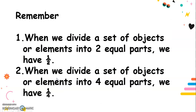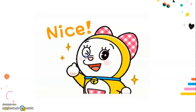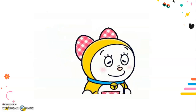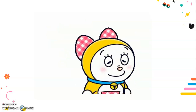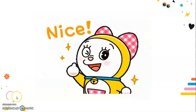Remember: when we divide a set of objects or elements into two equal parts, we have one-half. And when we divide a set of objects or elements into four equal parts, we have one-fourth. Good job, my dear Grade 1! Now you already know how to divide elements into two and four equal parts. Good job!